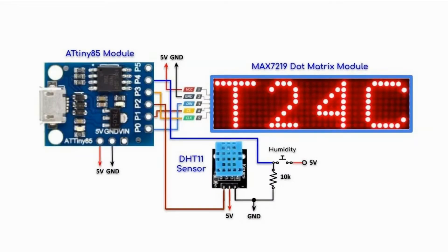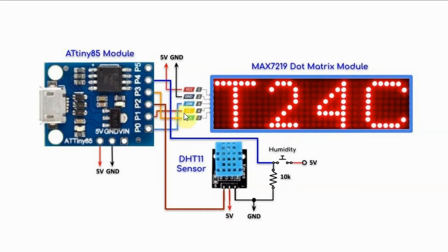A circuit diagram of the implemented system is shown here. We have the DHT11 sensor connected to digital pin 2 of the ATtiny85 controller. The MAX7219 dot matrix module is SPI interfaced using three digital pins for data in, chip select, and clock. We also have a push button connected to digital pin D4 of the controller.